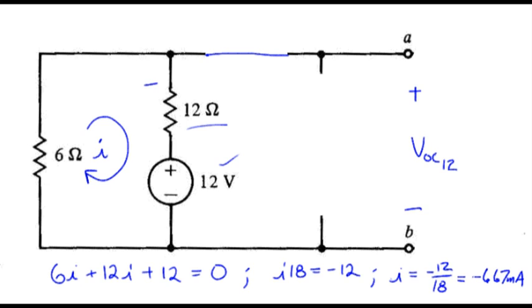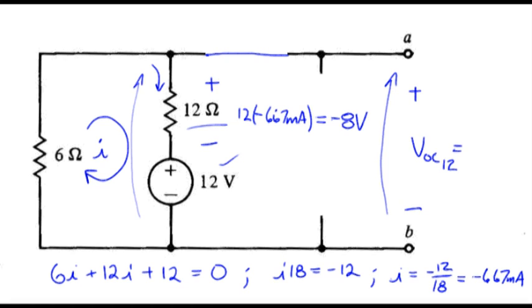So by that definition, let me write it on the other side here. We've got our current i entering the top, so that says this voltage is supposed to be 12 times minus 667 milliamps, which leads to minus 8 volts. So based on these definitions, the voltage rise going from B to A could be found as the same as the voltage rise over here. So we've got a rise of 12 volts and a rise of minus 8 volts. So open circuit voltage due to the 12 volt source acting alone is 4 volts.